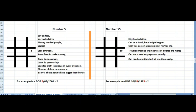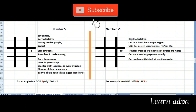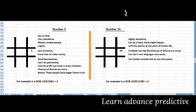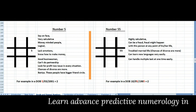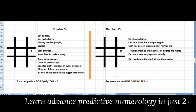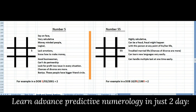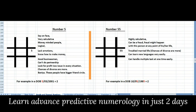Their friend circle is very big - they normally have a large friend circle. When number 55 comes, the person becomes highly calculated compared to number 5. They can be a fraud, or fraud might happen with them. Either of it will surely happen.